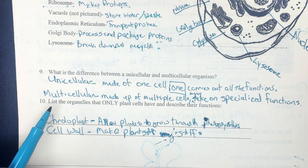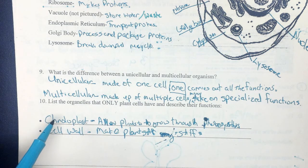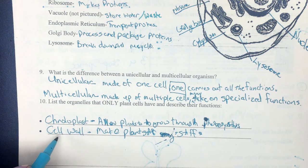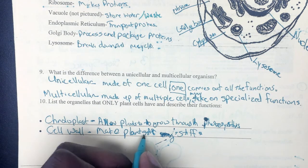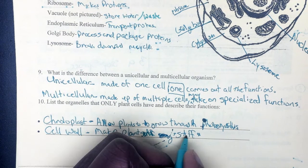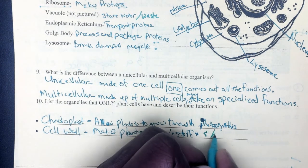Number 10: list the organelles that only plant cells have and describe their function. The two main ones are chloroplasts, which allow the plant to go through photosynthesis, and the cell wall, which makes the plant stiff and holds its shape.